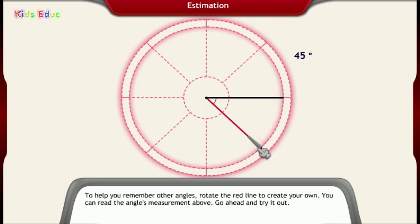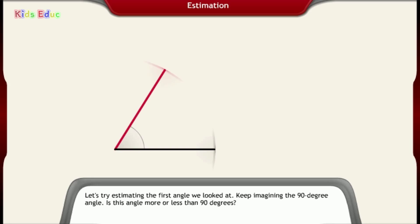45 degrees. 90 degrees. Let's try estimating the first angle we looked at. Keep imagining the 90-degree angle. Is this angle more or less than 90 degrees? Less. Good.